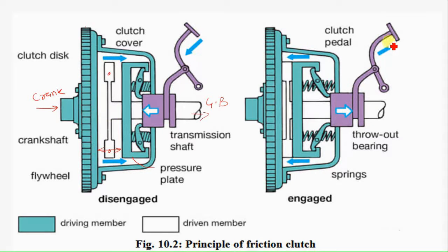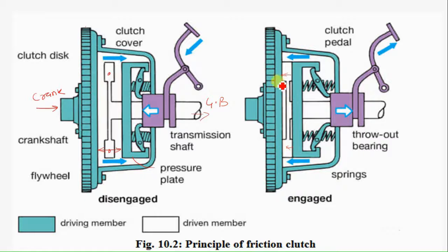When we just remove the pedal, there is a throwout bearing. With the help of this throwout bearing, the spring is expanded, and the pressure plate applies pressure on the friction plate. As a result, there is a connection between the flywheel and the pressure plate, friction is generated, and that friction rotates the transmission shaft so that power is transmitted.